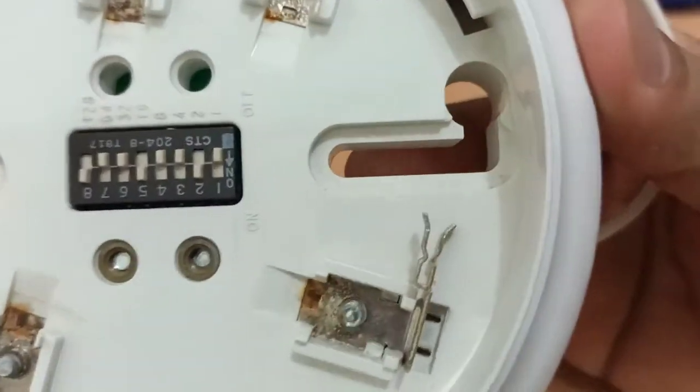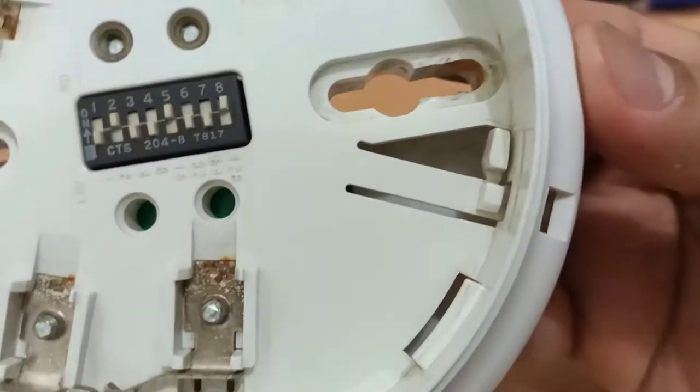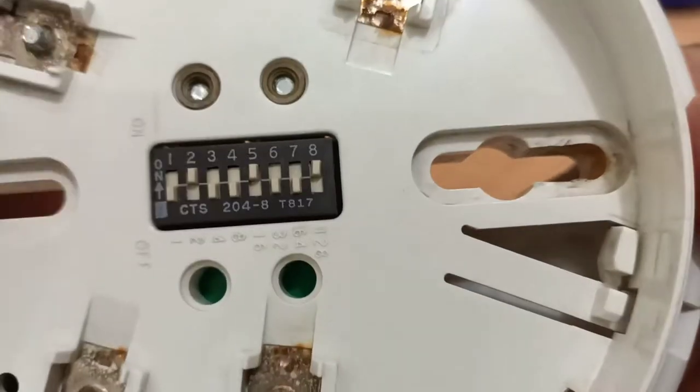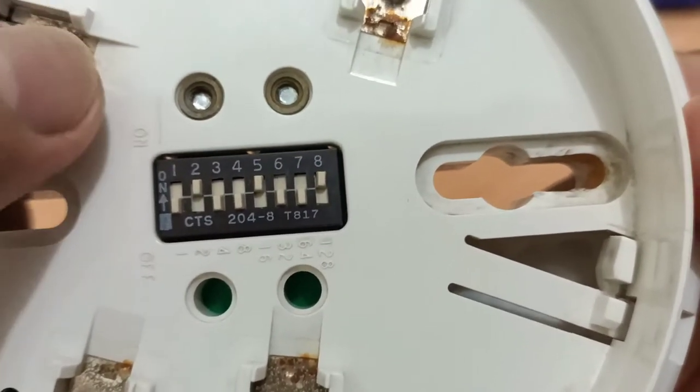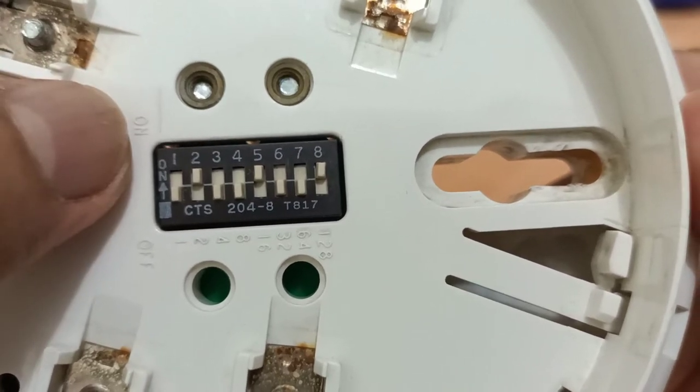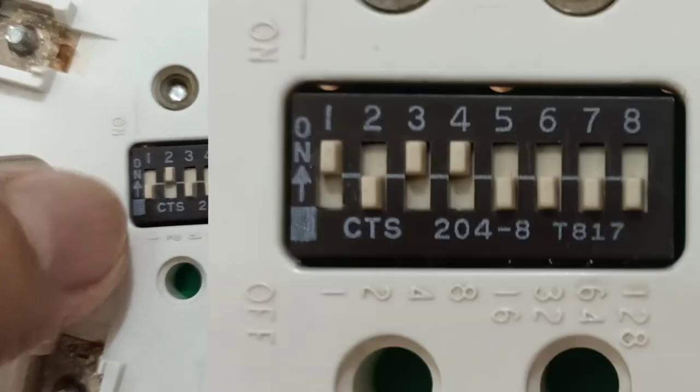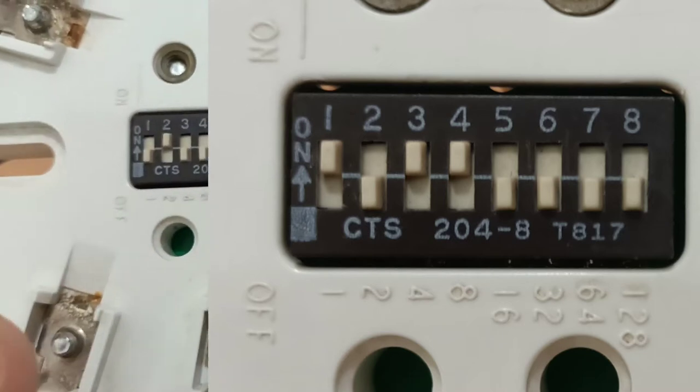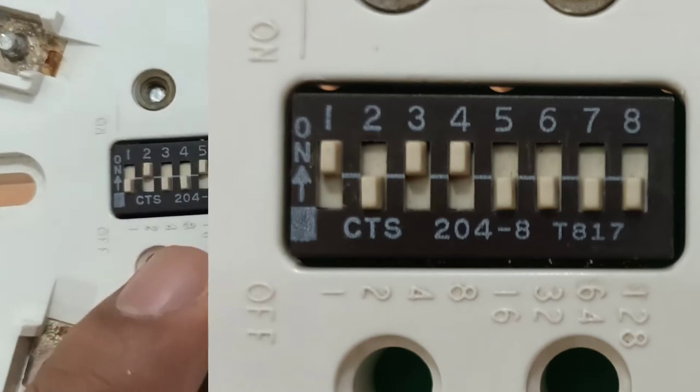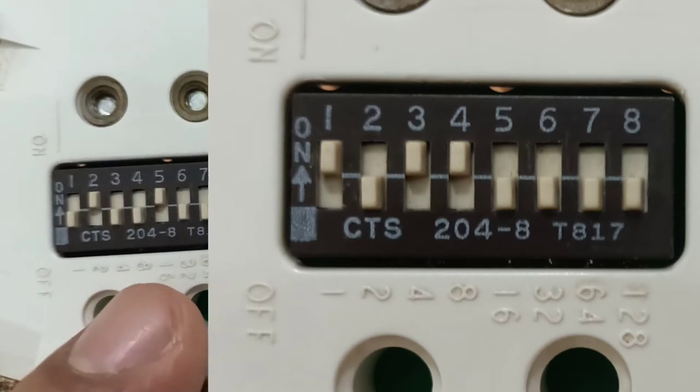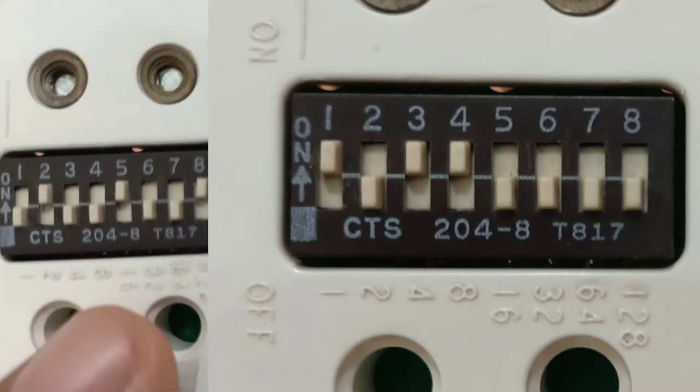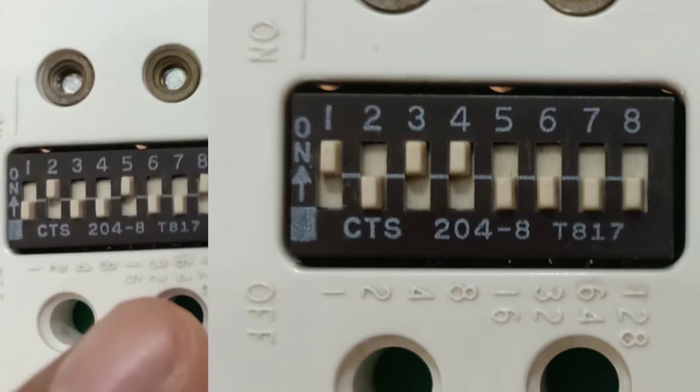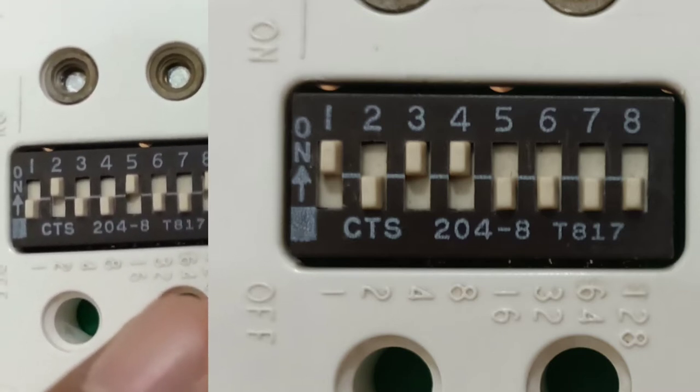So guys, this is the DIP switch or we are addressing. You see guys, you have above going up, above the switch is on, going down. And then number one indicates one, number two indicates two, number three indicates four, number four indicates eight, number five indicates sixteen, number six indicates thirty-two, number seven sixty-four.